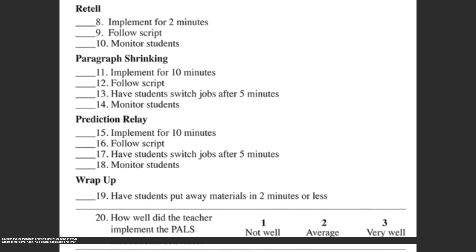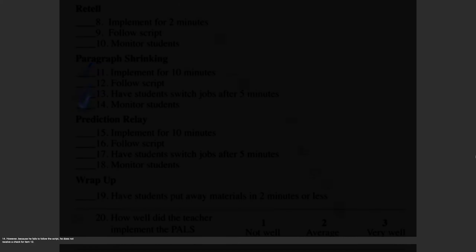For the paragraph shrinking activity, the teacher should adhere to four items. Again, he is diligent about setting his timer and implements the activity for ten minutes, making sure to instruct his students to switch jobs after five minutes. For this reason, he will get checks for items 11 and 13. He also walks around the classroom to monitor his students, so he receives a check for item 14. However, because he fails to follow the script, he does not receive a check for item 12.